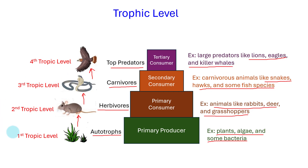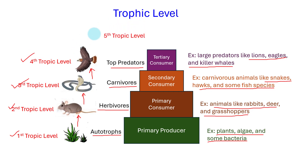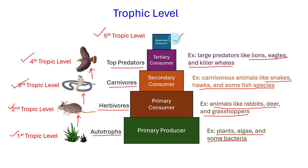So we get trophic levels 1, 2, 3, and 4. In some ecosystems, there can be additional trophic levels, such as quaternary consumers — predators that feed on tertiary consumers.